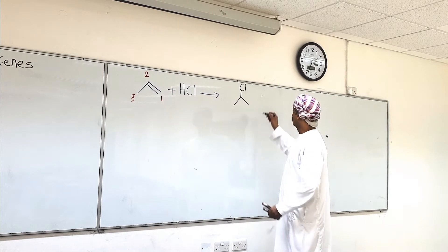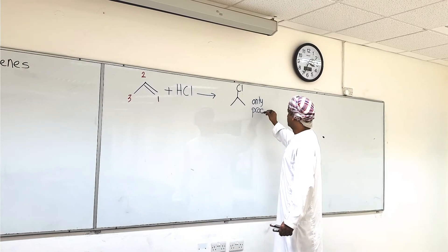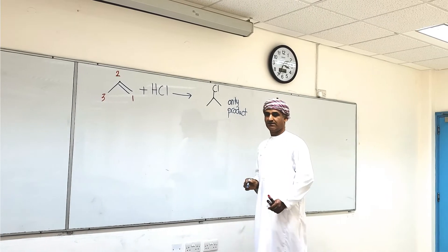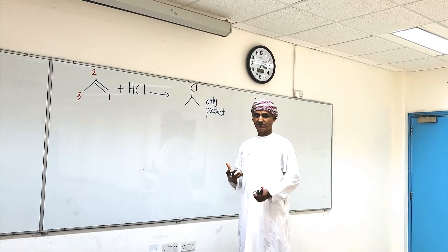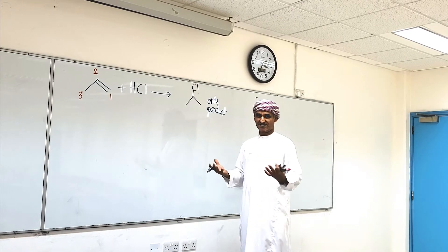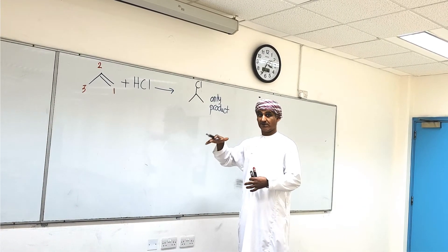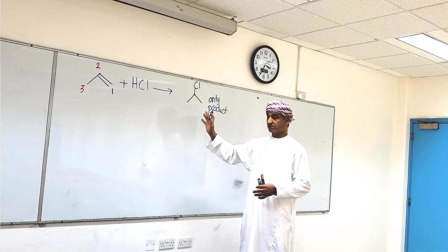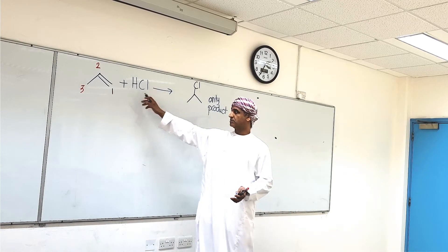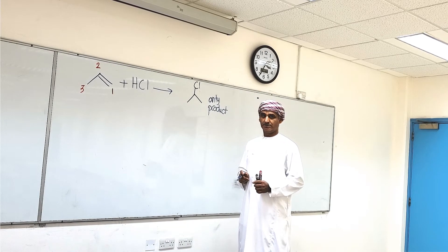This is the only regioisomer produced. A regioisomer is a structure of the same formula but different from another based on the region — the location where the atoms of the reagent are now different. The other regioisomer, where hydrogen bonds to carbon two and Cl bonds to carbon one, will not be produced.